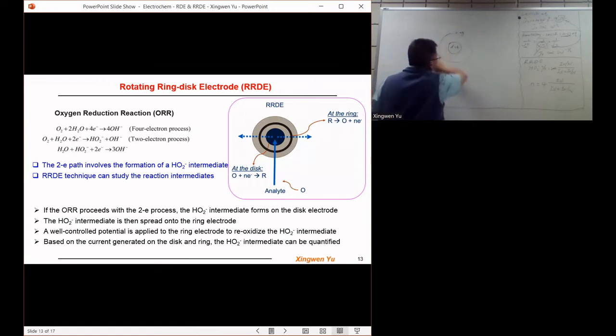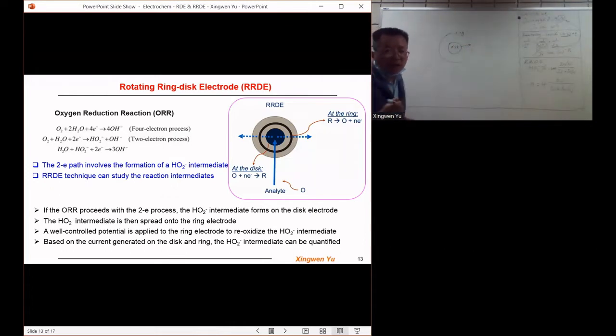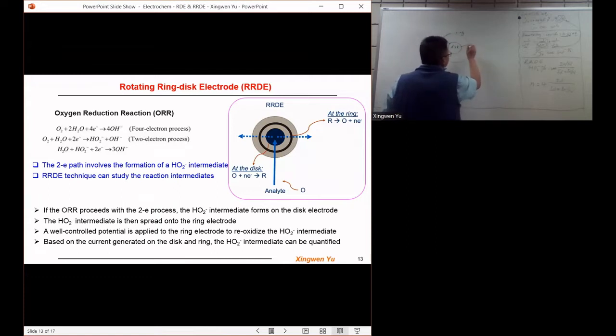On the disk electrode, when the electrode rotates, the intermediate species will be spread up to the ring electrode. On the ring electrode we can apply a potential that can oxidize the formed intermediate species.